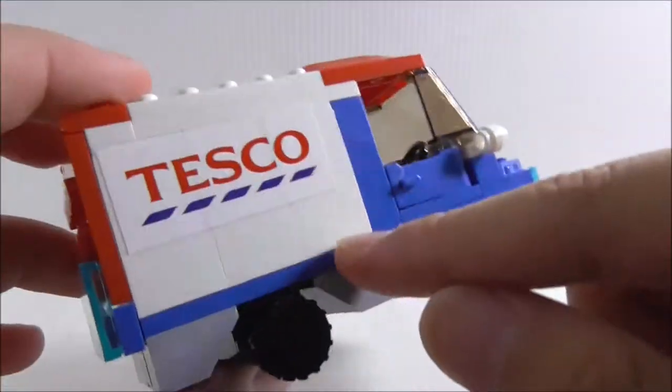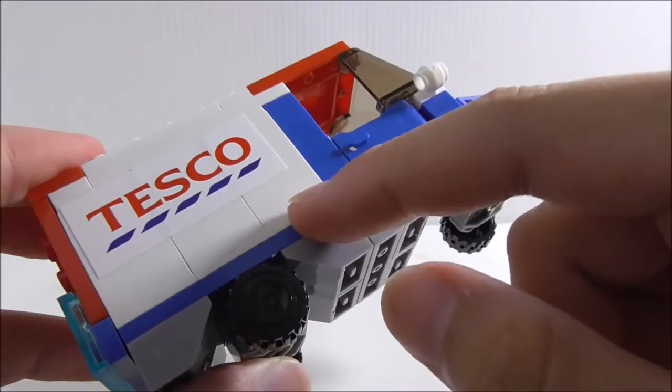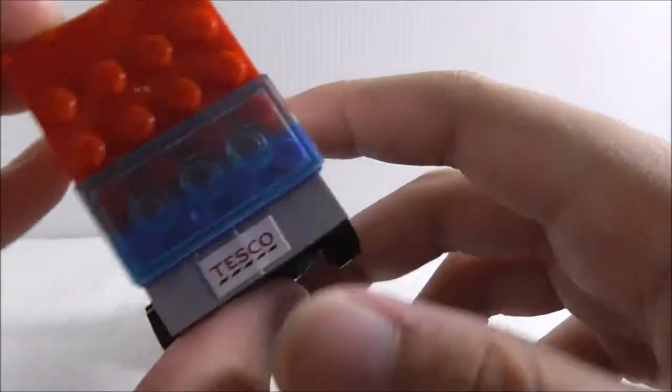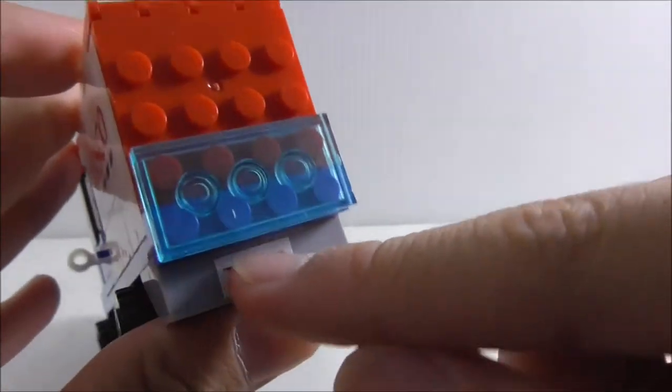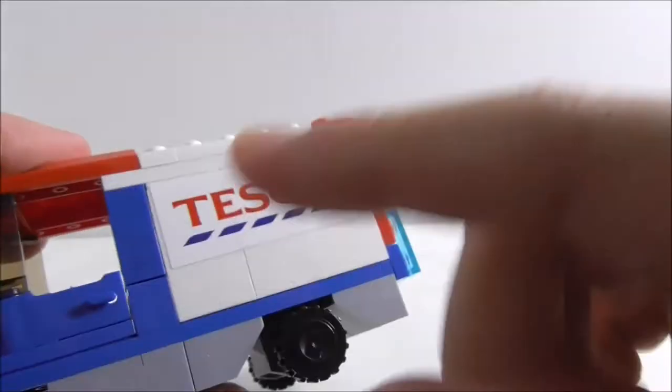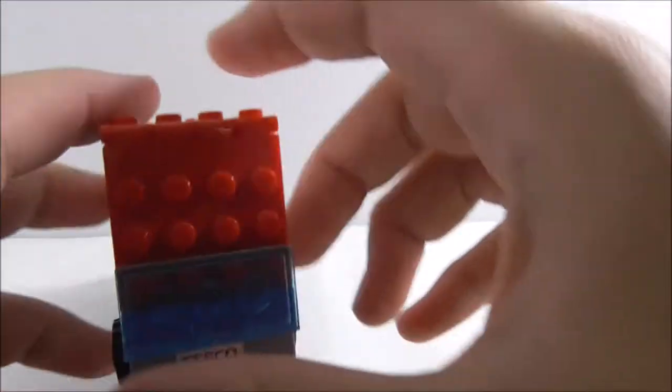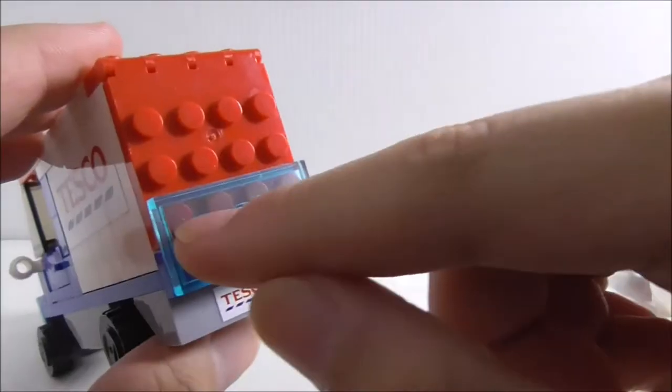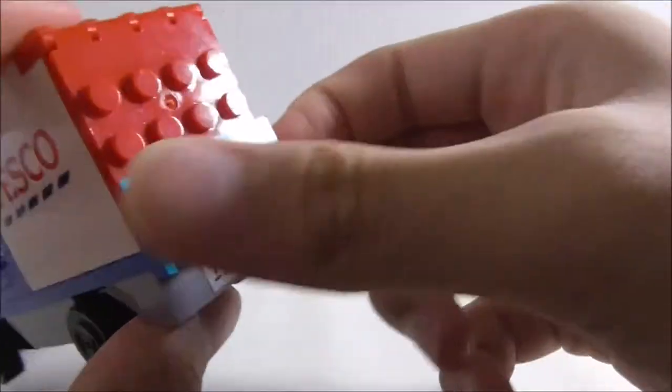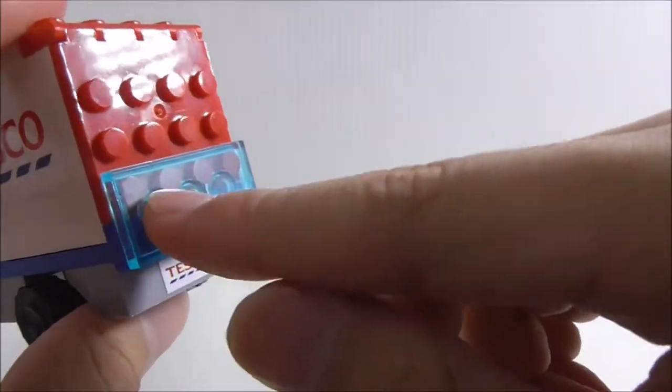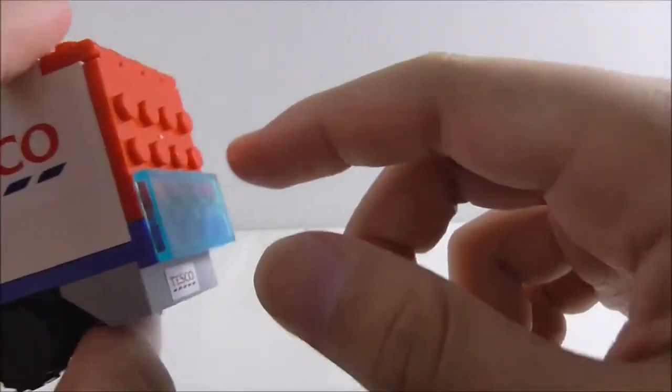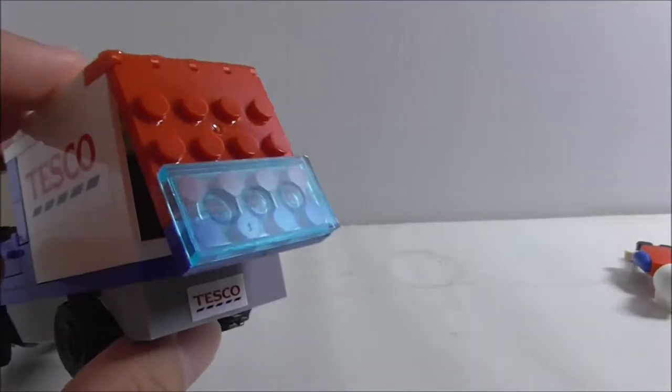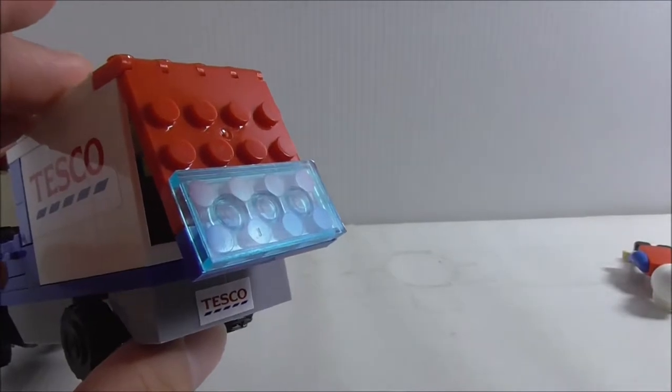On the side, you got this big Tesco sticker, could have been a printed piece though. At the back, you got the Tesco license plate and you got the other side, you just got the same thing. You got this opening back door here. You have this tail light here, which is a current solution blue 2x4 tile piece. Doesn't seem like Lego has made this before, so it's definitely nice to get it.